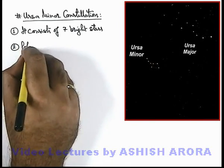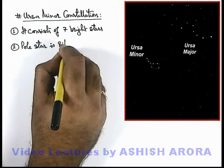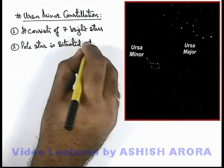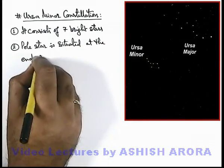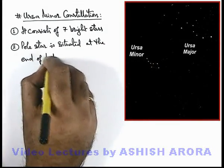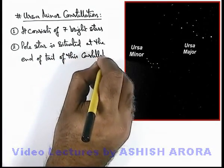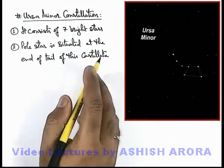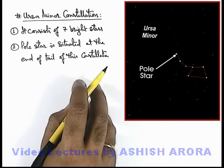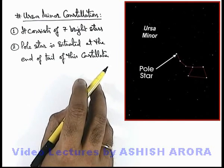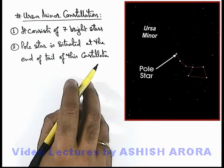Another important fact about Ursa Minor constellation is that the pole star is situated at the end of the tail of this constellation. Here you can see in this picture that the last star in the tail of this constellation is the pole star, which is an identification point — a way to identify the Ursa Minor constellation.